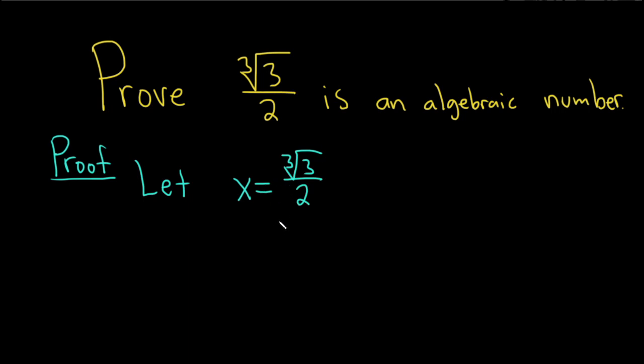The easiest way to do that is to get rid of all the roots. So we have a cube root, so let's start by cubing both sides.